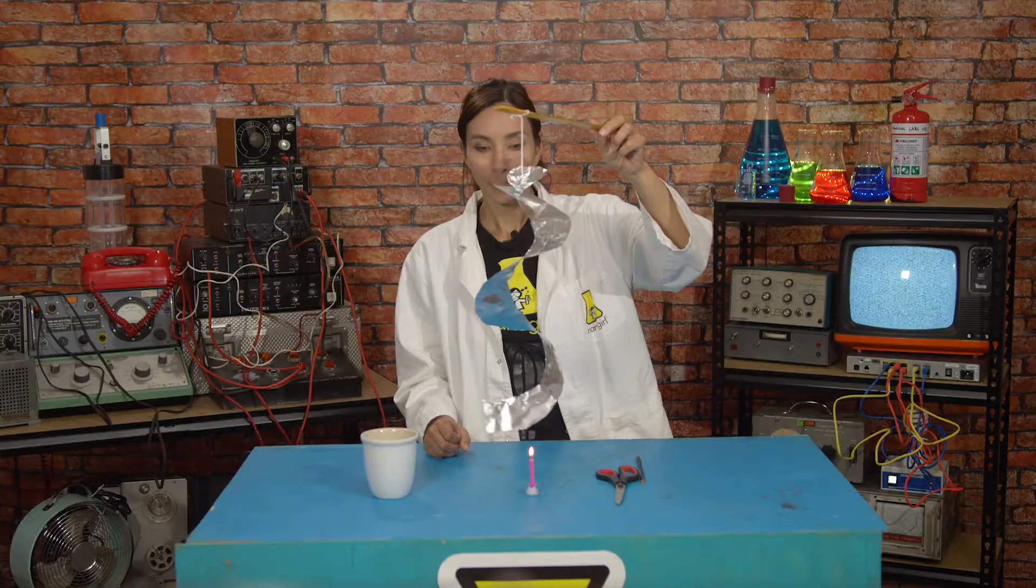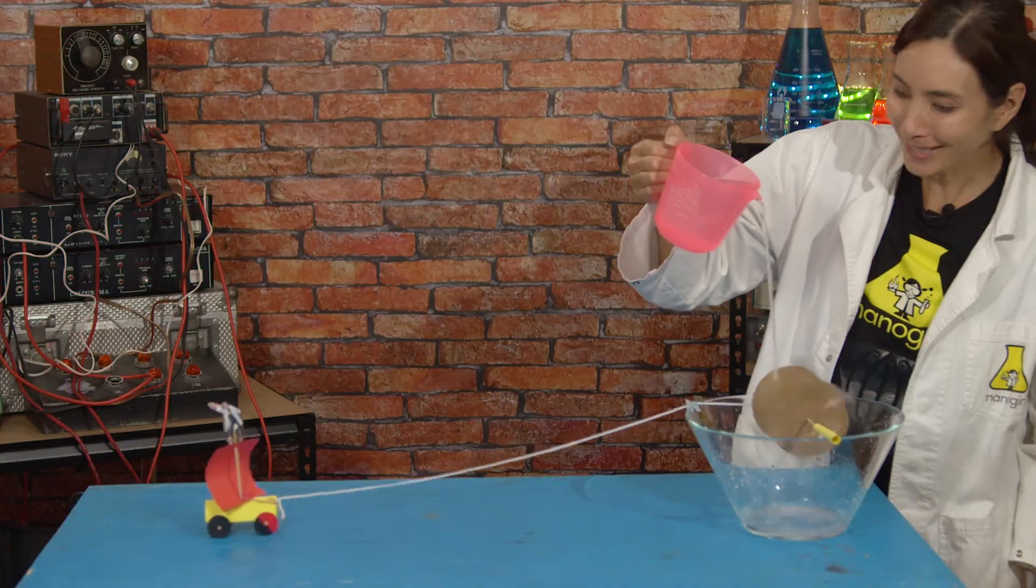I was also thinking about how we could do an experiment that puts together everything that we have learned this week and helps us to understand rain. So let's recap. This week we've learned about wind and heat and water. So how do they all work together to make rain?